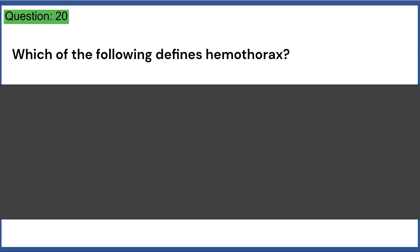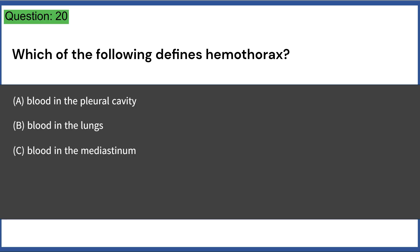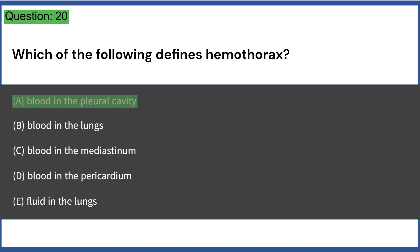Which of the following defines hemothorax? A. Blood in the pleural cavity, B. Blood in the lungs, C. Blood in the mediastinum, D. Blood in the pericardium, E. Fluid in the lungs. Answer: A.